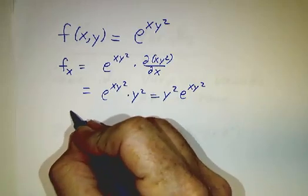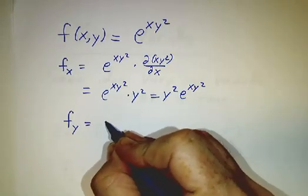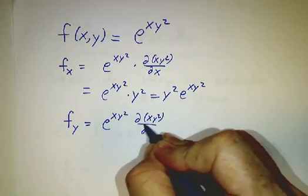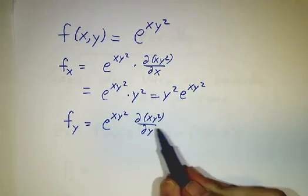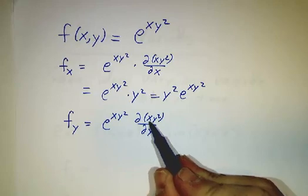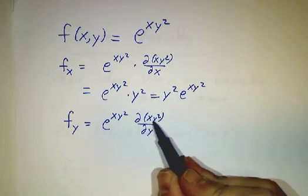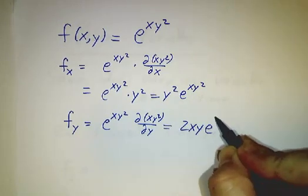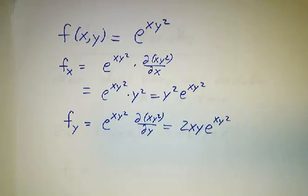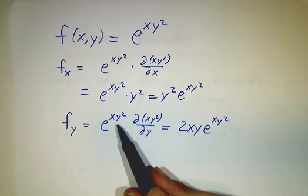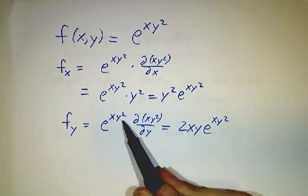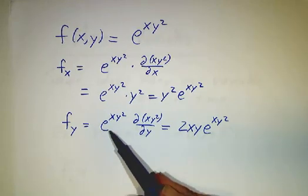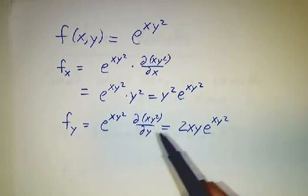And if you wanted to figure out the derivative with respect to y, you would say, well, that's e to the xy squared times the derivative of xy squared with respect to y. And now, we're treating x as if it's a constant. The derivative of a constant times y squared is that constant times 2y. So, we get 2xy e to the xy squared. All we're doing is we're taking a derivative the usual way. You know how to take a derivative of e to the 3y squared with respect to y or e to the 7y squared with respect to y. We're just taking the derivative of e to the xy squared with respect to y where x is just a constant.